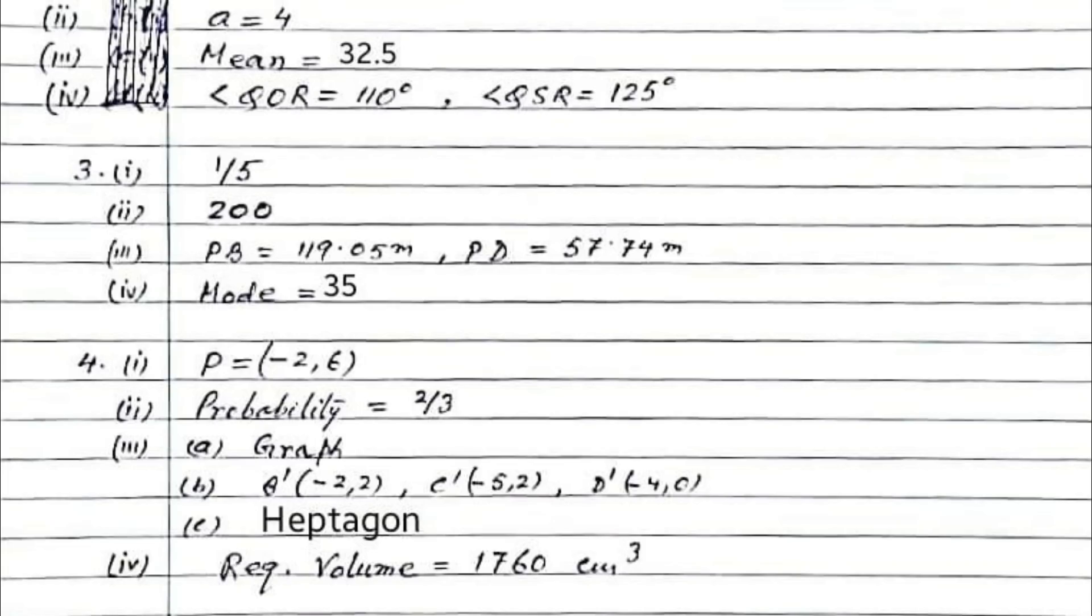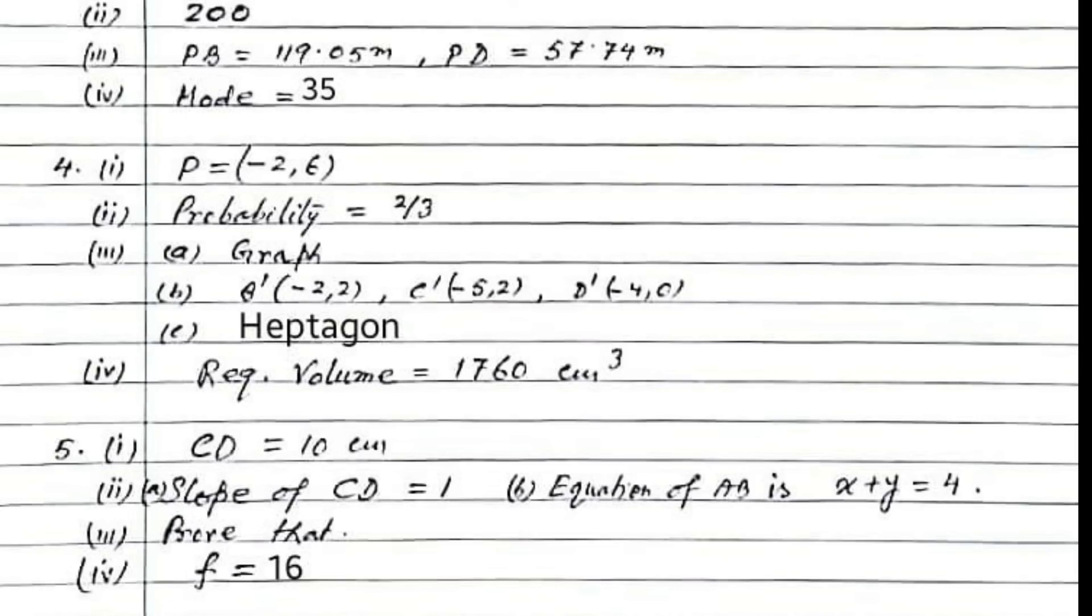The fourth part to the fourth question: the required volume is 760 cubic centimeters. Question 5: CD will be 10 centimeters. The second part, slope of CD: